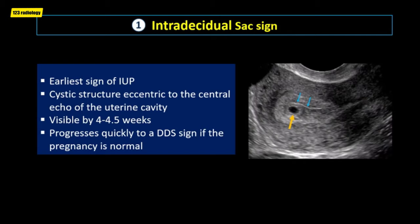The intradecidual sac sign is the earliest sign of intrauterine pregnancy. It is seen at the time of implantation when the early embryo burrows itself into decidualized endometrium. It is seen as a spherical, cystic structure eccentric to the central echo of the uterine cavity.